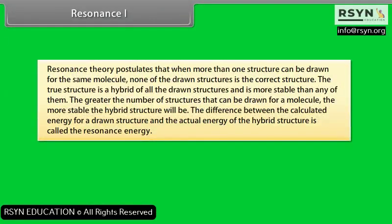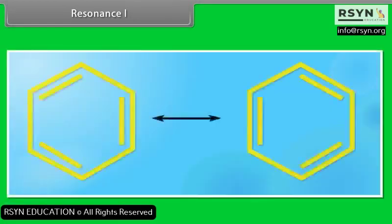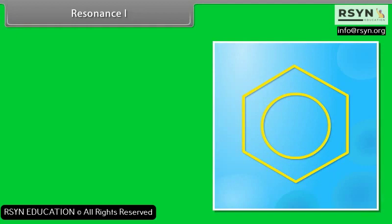Resonance theory postulates that when more than one structure can be drawn for the same molecule, none of the drawn structures is the correct structure. The true structure is a hybrid of all the drawn structures and is more stable than any of them. The greater the number of structures that can be drawn, the more stable the hybrid structure will be. The difference between the calculated energy for a drawn structure and the actual energy of the hybrid structure is called the resonance energy. The greater the resonance energy, the more stable the compound. The two Kekulé structures that can be drawn for the benzene molecule are actually two resonance structures, and the hybrid of these structures would be drawn as a circle inside a hexagon.